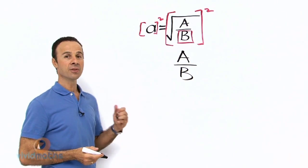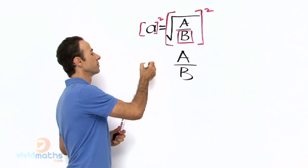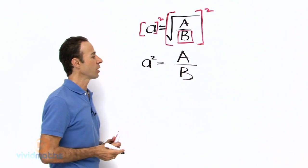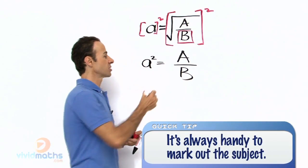Ok? Now on this side we have got the a squared. How do we make b the subject? That is the question now.